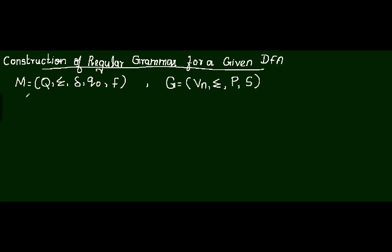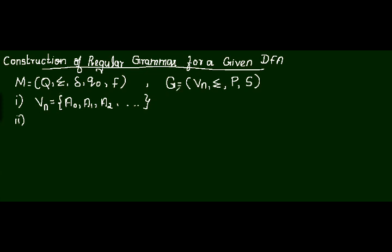So, first step — a DFA is given and we want to find these four parts from this DFA. We want to find V_N. We will be writing all the state names as V_N — for example, A0, A1, A2, and so on. Next part is Sigma. In DFA there is also a Sigma, and in grammar there is also a Sigma. We will be using the same terminals for machine M as well as grammar G.